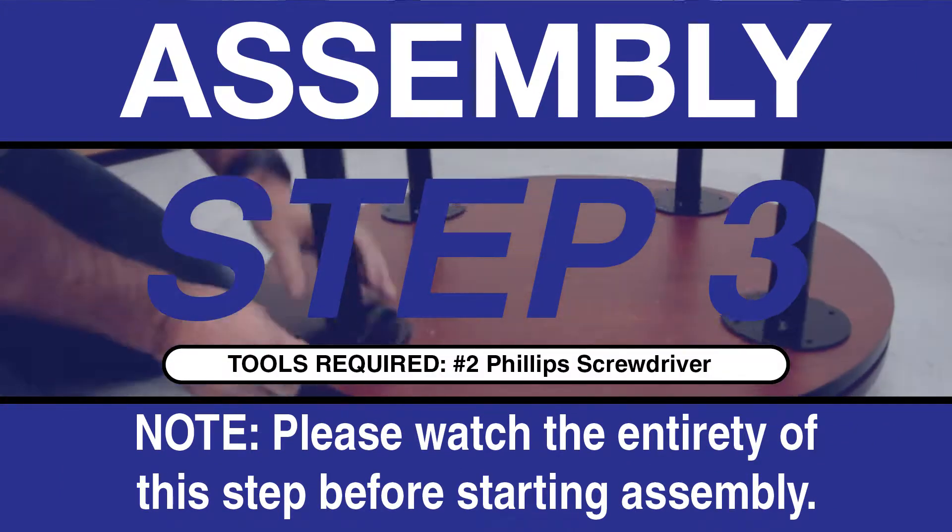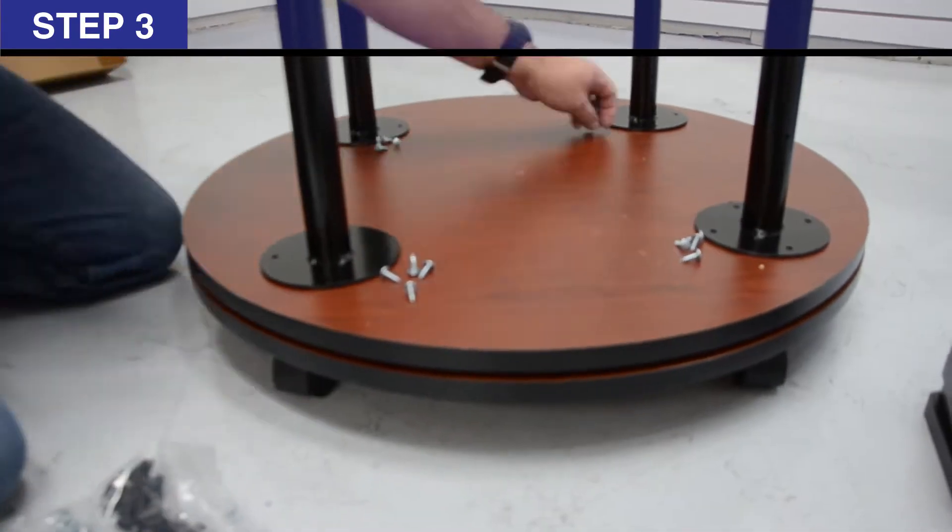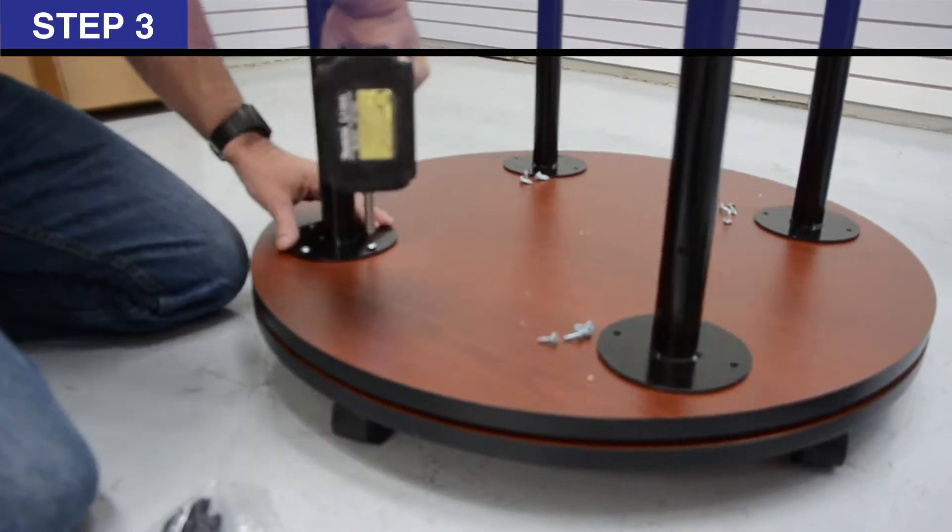Step 3: Attach 4 bottom poles O to base Q using 16, 5/8 inch truss head screws A.